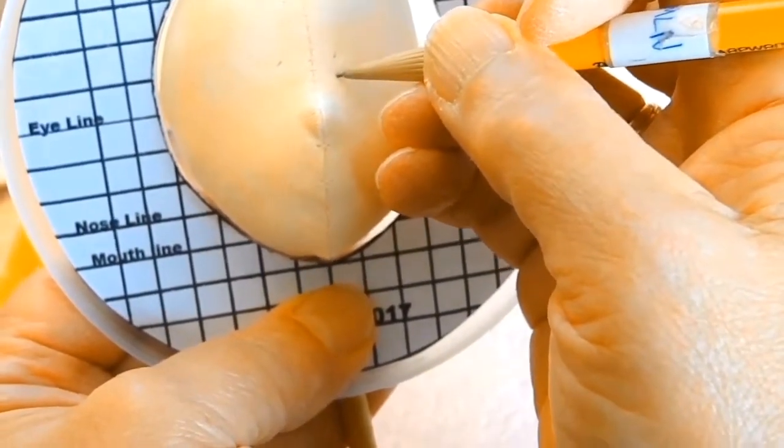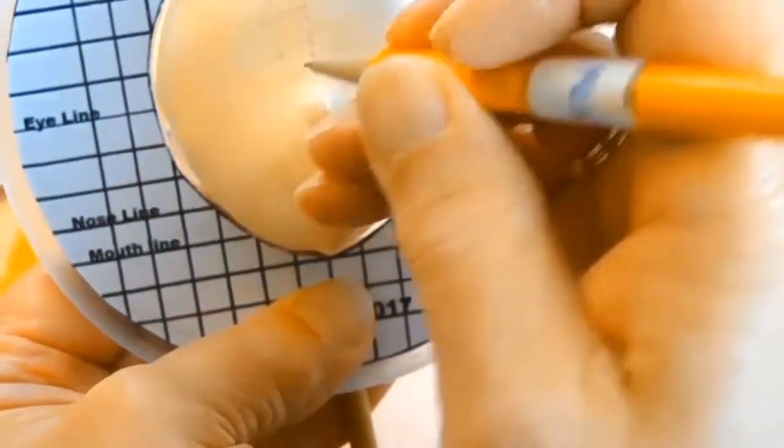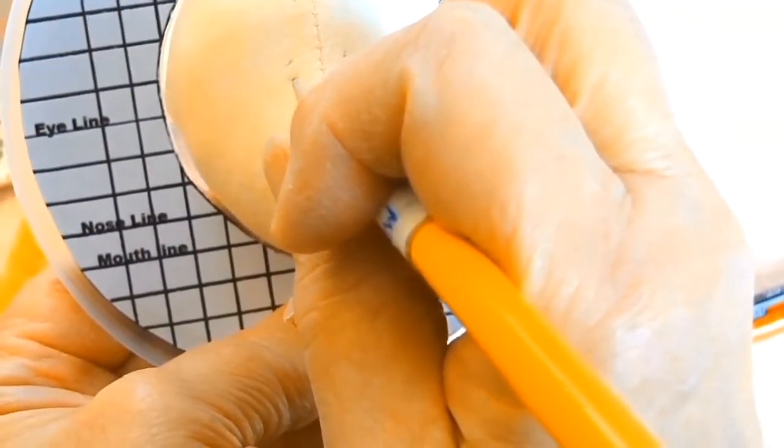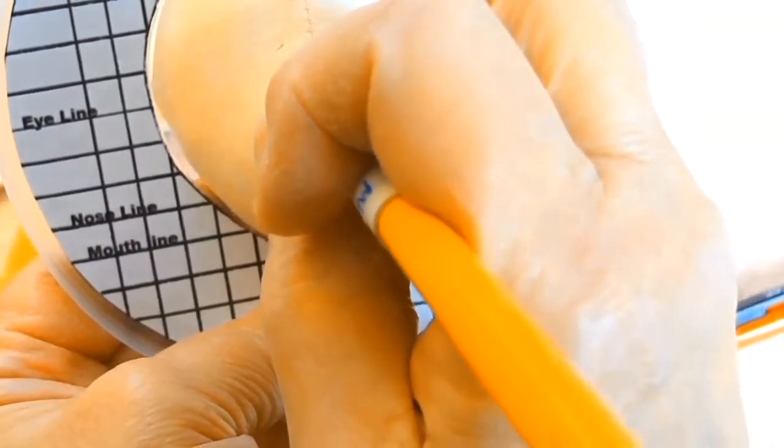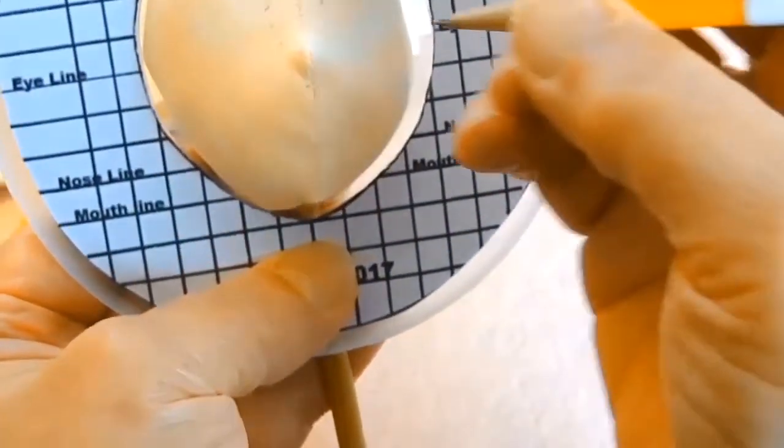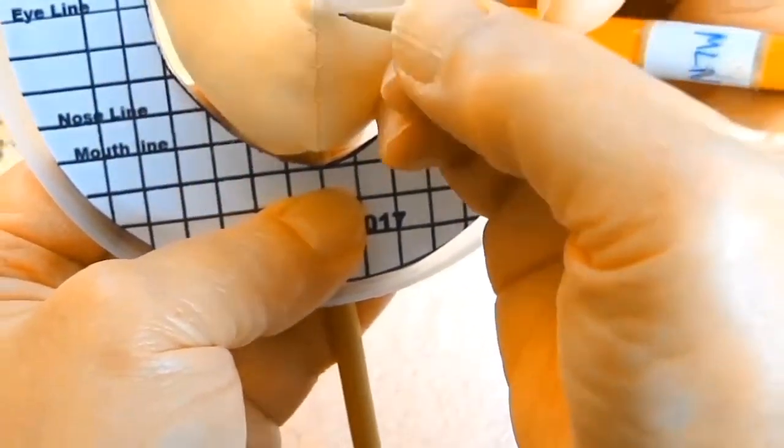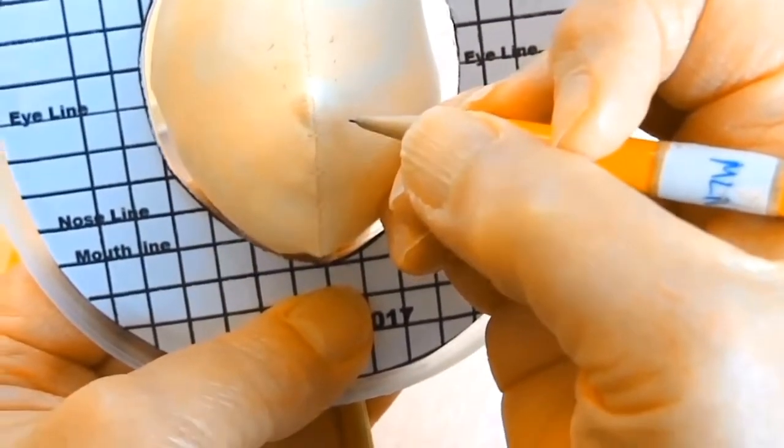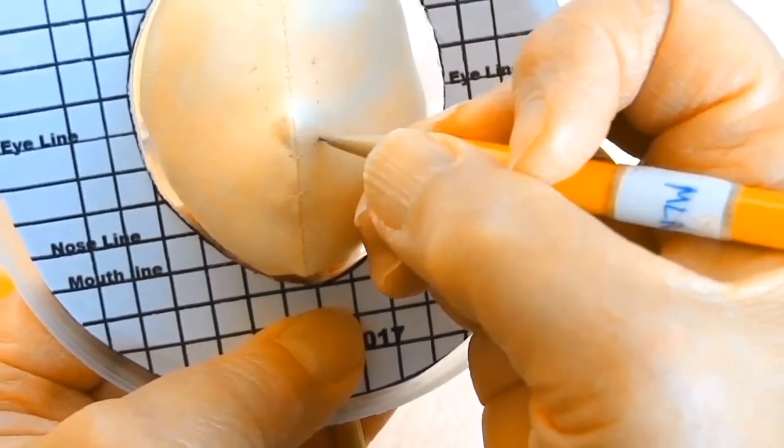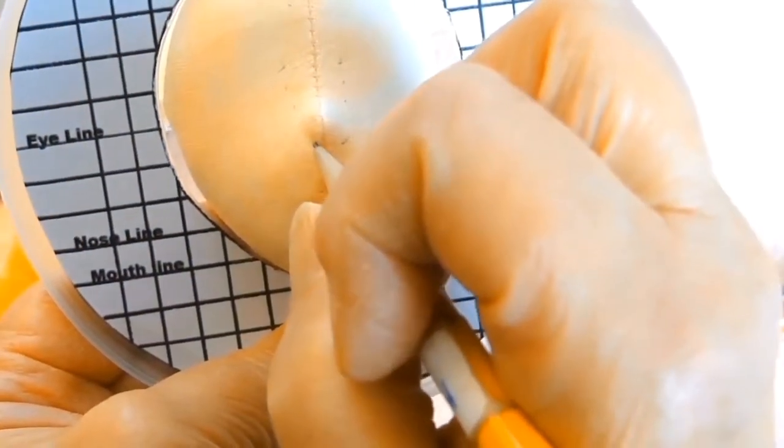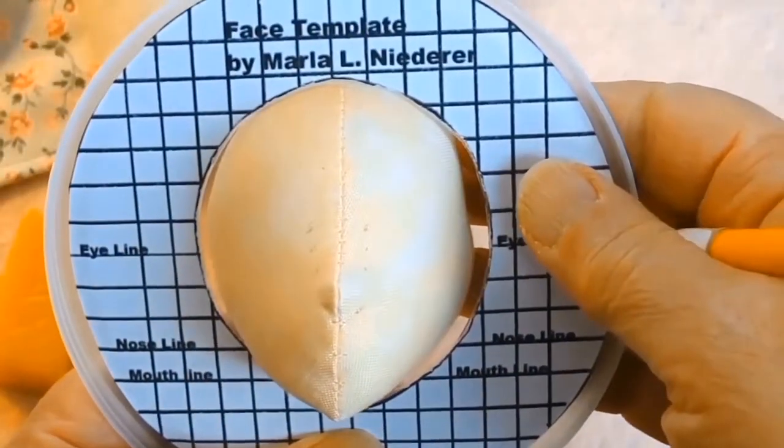As you can see right here, I'm just making marks along the side of the bridge of the nose, and then I'm putting a mark for each nostril. I find that before I do the needle sculpting, I like to put all my placement marks first because they do change with the needle sculpting.